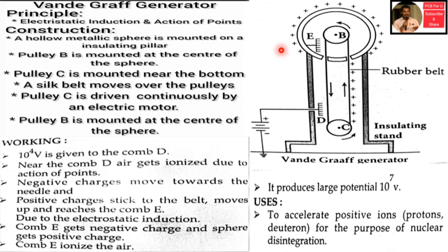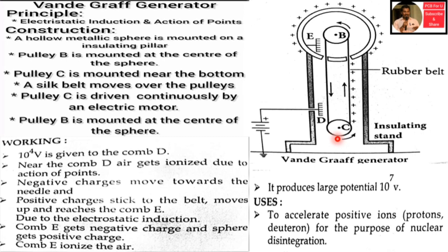Next topic: the Van de Graaff generator — this is the theory part. It is used to accelerate charged particles. The basic principle involves electrostatic induction and sharp points. The construction consists of a hollow metallic sphere supported on two insulated pillars, with a belt and pulleys.